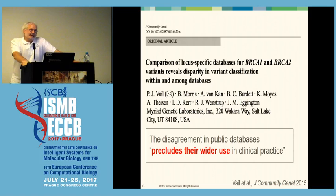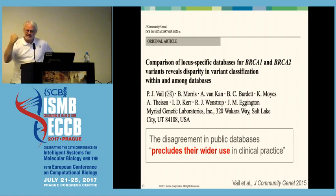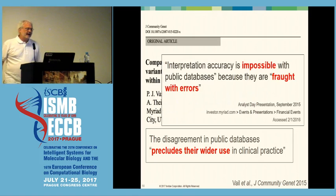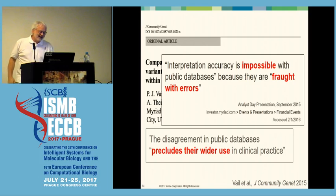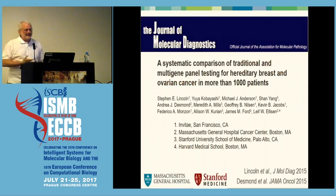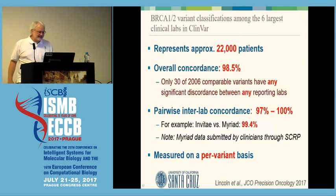Not everyone likes this idea. For example, there's a laboratory in Salt Lake City that not only doesn't share data, but seems to go out of their way to bash open data sources, saying the disagreement in public databases precludes their wider use in clinical practice, and that interpretation accuracy is impossible with public databases because they're fraught with errors. As much as I would love to use the word 'fraught' in more sentences — what a great word — it seems inconsistent with the data. In this clinical study that we published with MassGen and Stanford, we see quite high agreement, and it doesn't make any sense what they're saying.